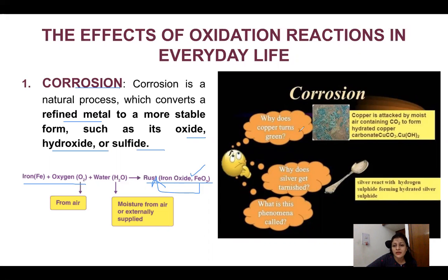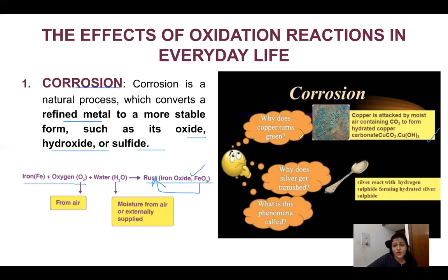In the case of copper, when exposed to moisture and carbon dioxide, it develops a green color coating. For silver, it tarnishes — when exposed to moisture, it combines with hydrogen sulfide and forms silver sulfide. This whole phenomenon is called corrosion. Iron corrosion specifically is called rusting.